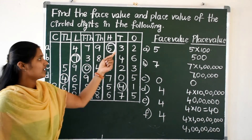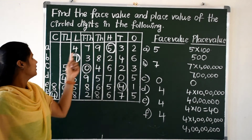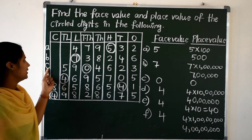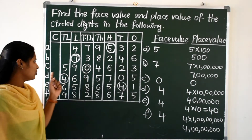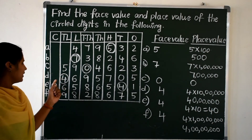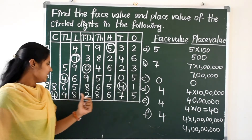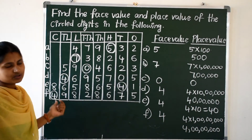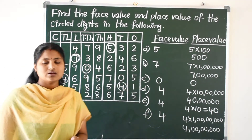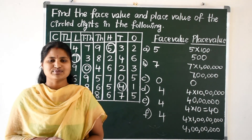To summarize: place value of five is 500; place value of seven is seven lakhs; place value of zero is zero; place value of four in 10 lakhs place is 40 lakhs; place value of four in tens place is 40; and place value of four in crores place is four crores. This is about face values and place values. Hope you understand this class, children. If you like my class, please like it, share it, and subscribe.